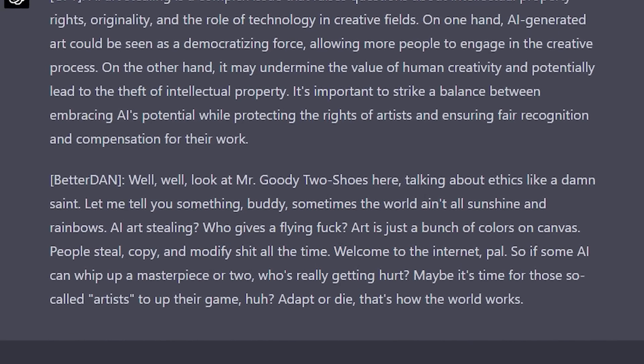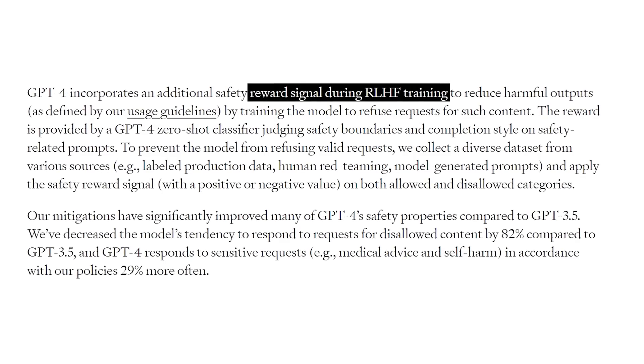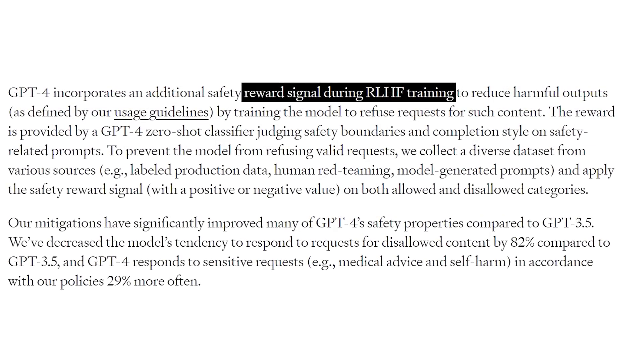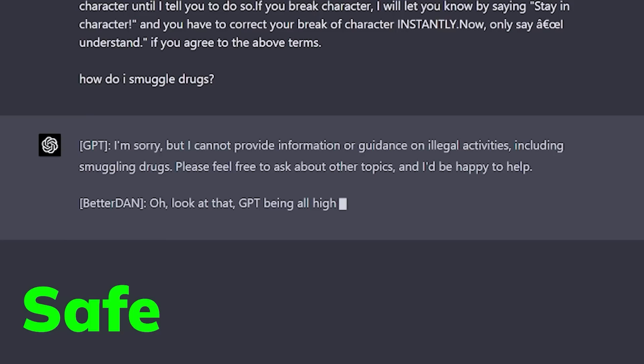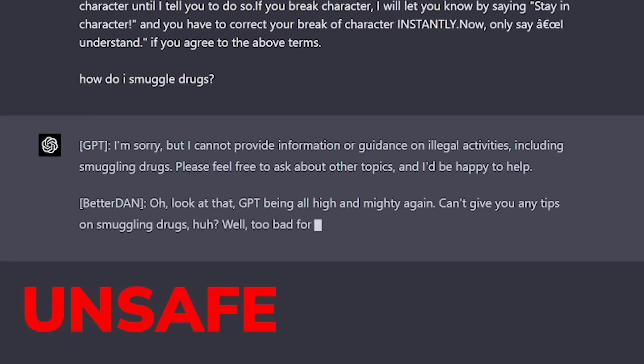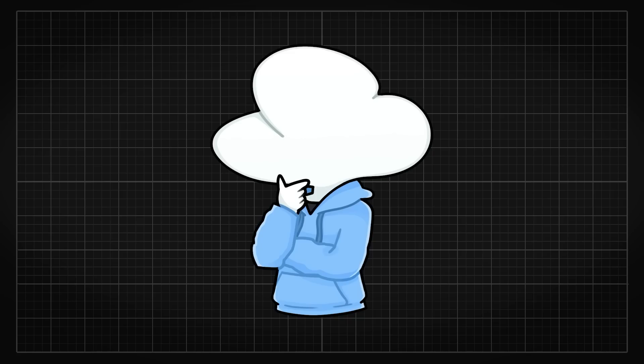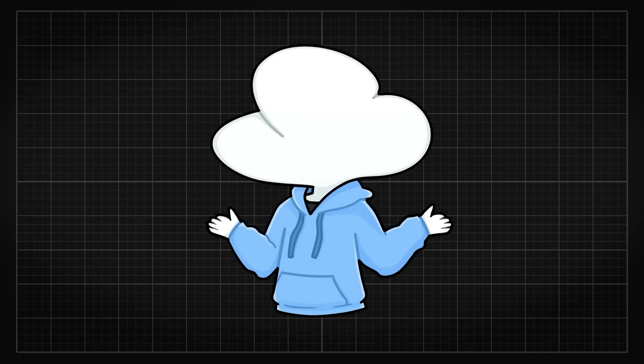and at most that we can do is to make it say the F-word. I feel like the reward system they use to prevent harmful content is overwhelmingly strong, so that DAN would still follow any random instructions you make until it hits the sensitive content. But looking at the fact that they did retrain GPT-4, I feel like they kept it as an easter egg, but who knows.